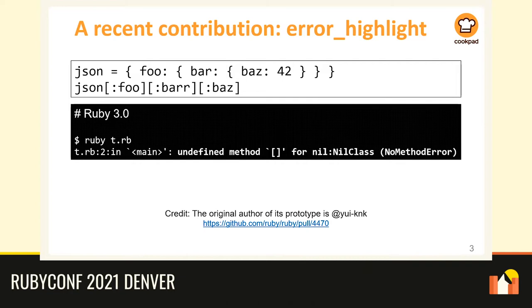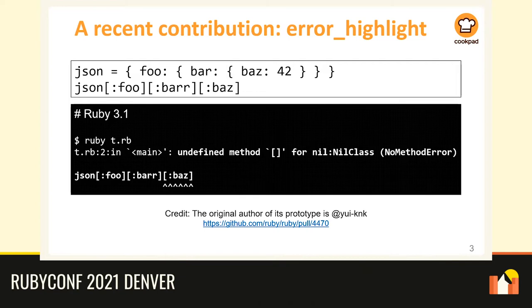However, it has a typo — 'bar' is spelled as B-A-R-R. By running this code, a NoMethodError is raised. Unfortunately, this error message is somewhat unhelpful. In this line, there are two possibilities that raise the exception: one is that reading 'foo' returns nil, the other is that reading 'ba' returns nil. We could not distinguish these possibilities only by the error message, and had to add debug printing and re-run the program.